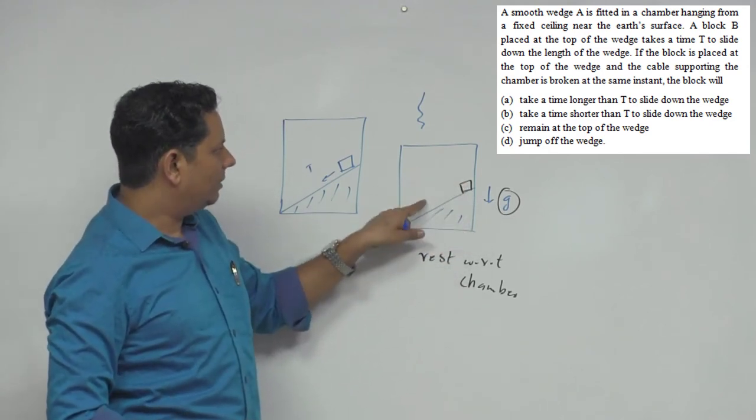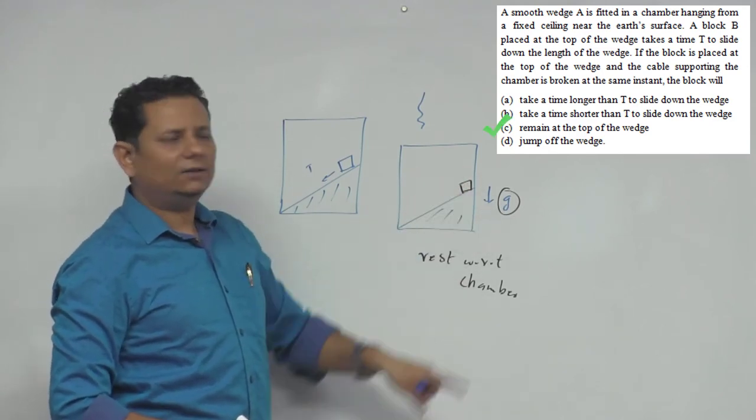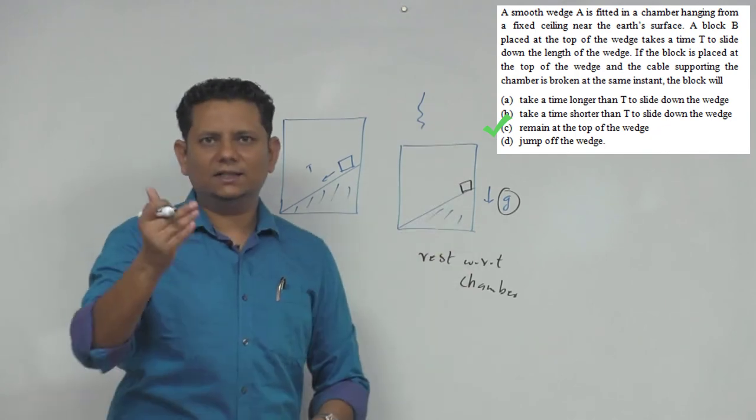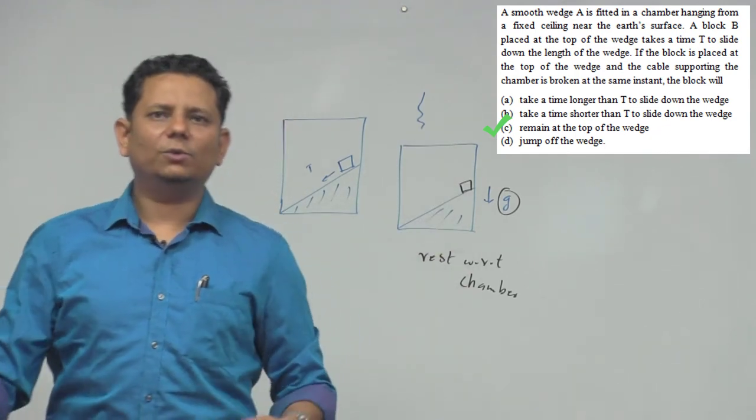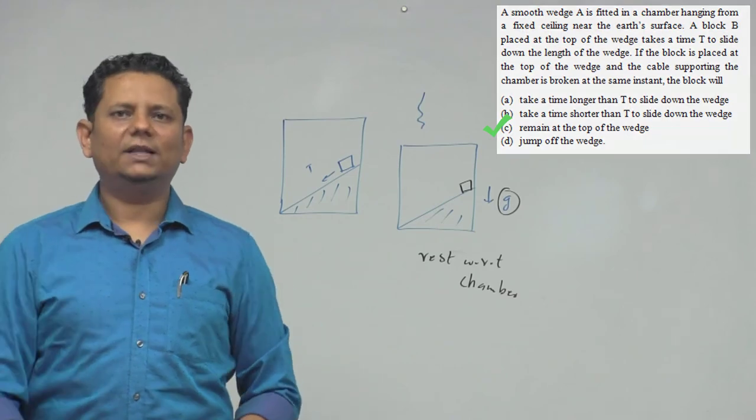In fact, agar isko is frame mein dekhenge, to ye ka ye donon ek saath g acceleration se niche aayenge. And hence, remain at top of the wedge - option C would be the right answer.